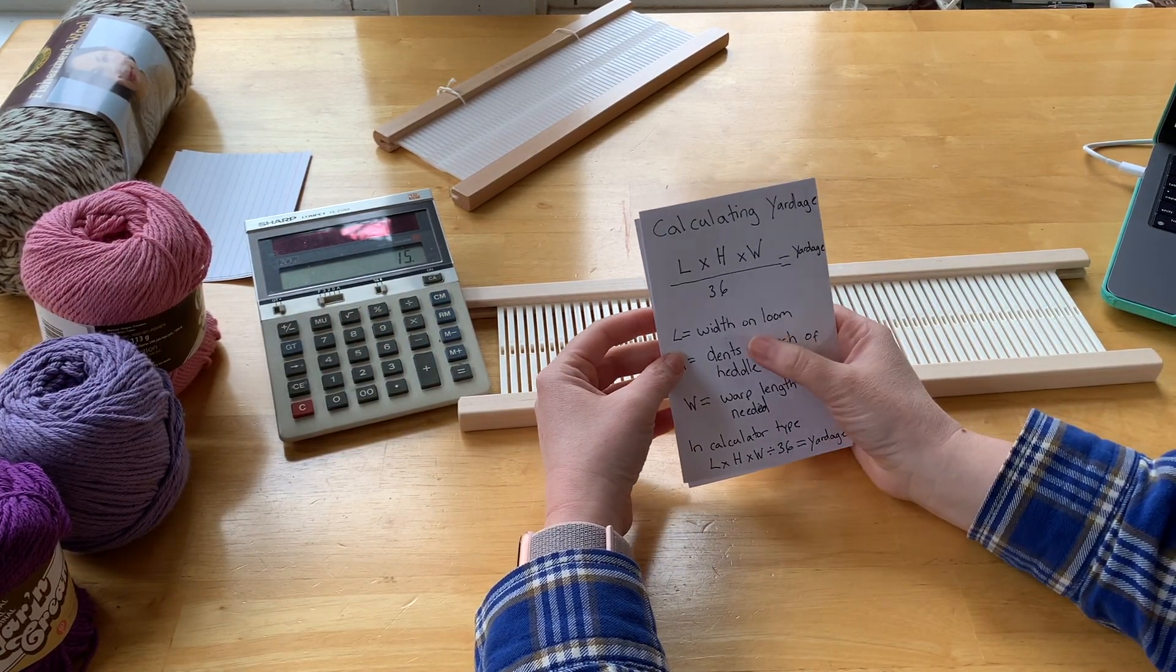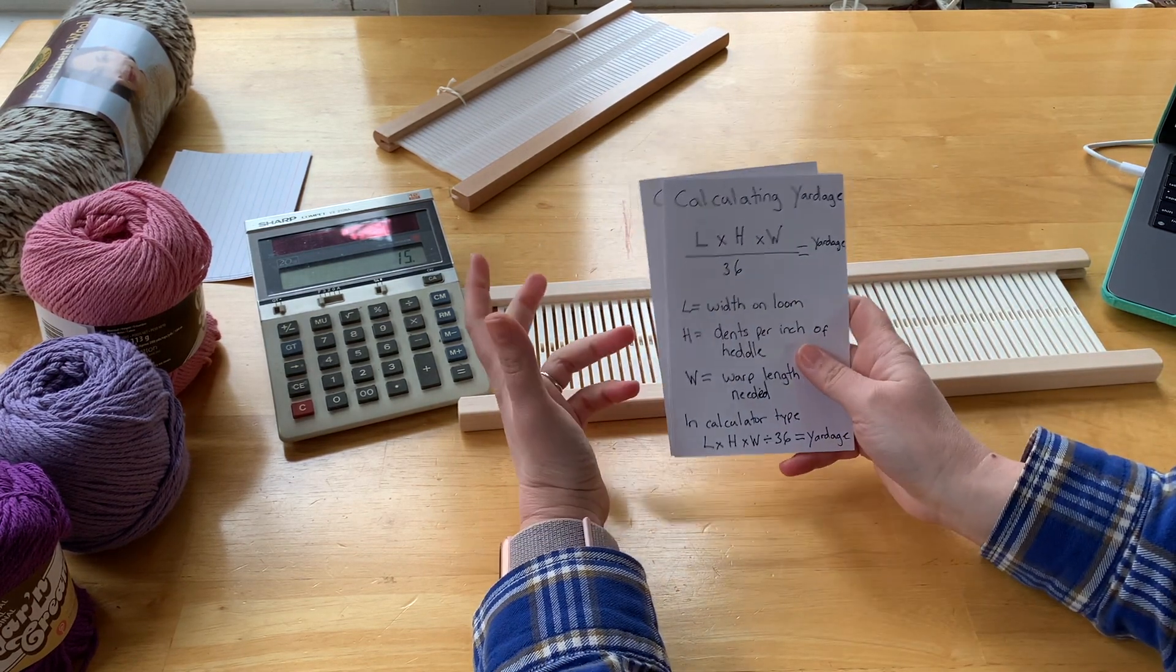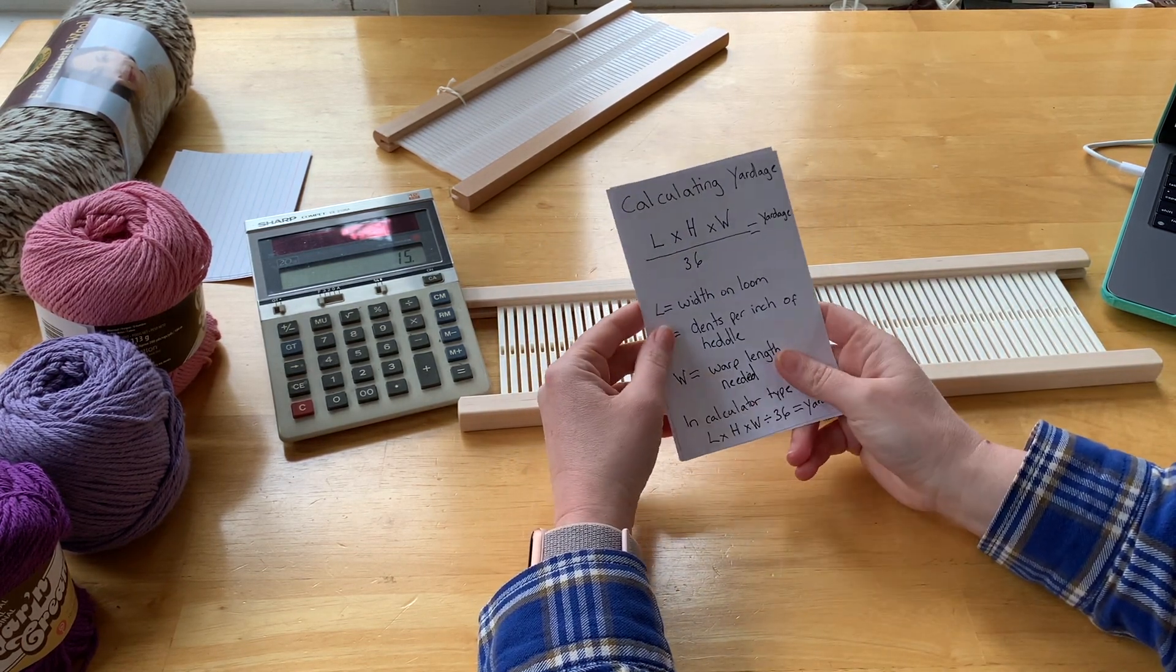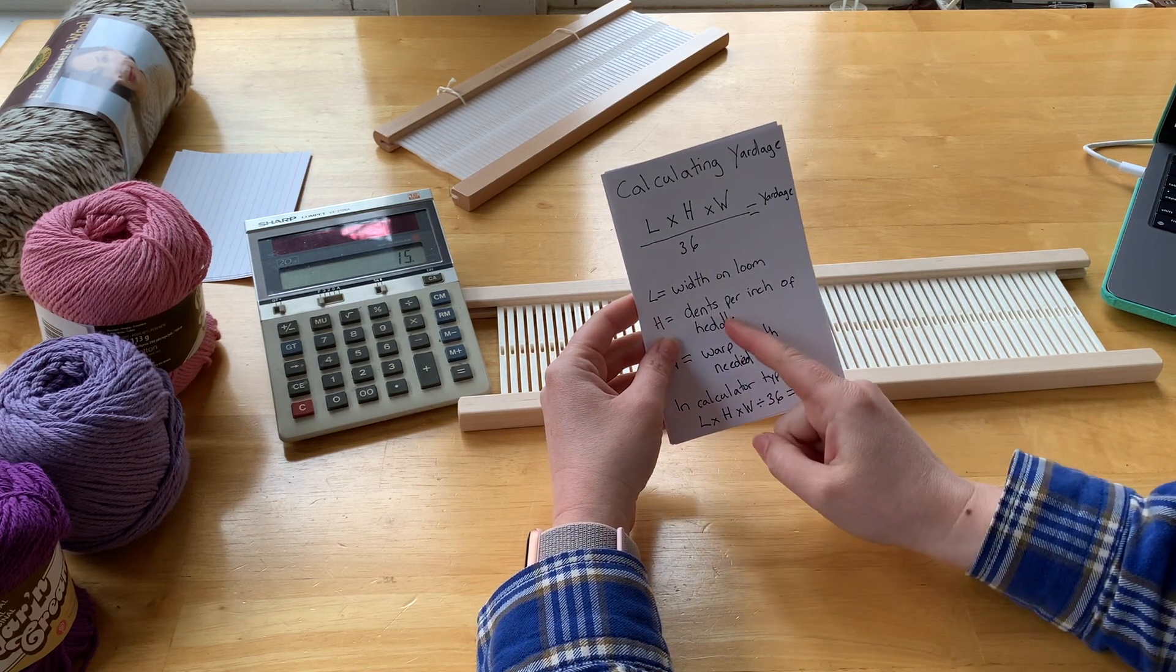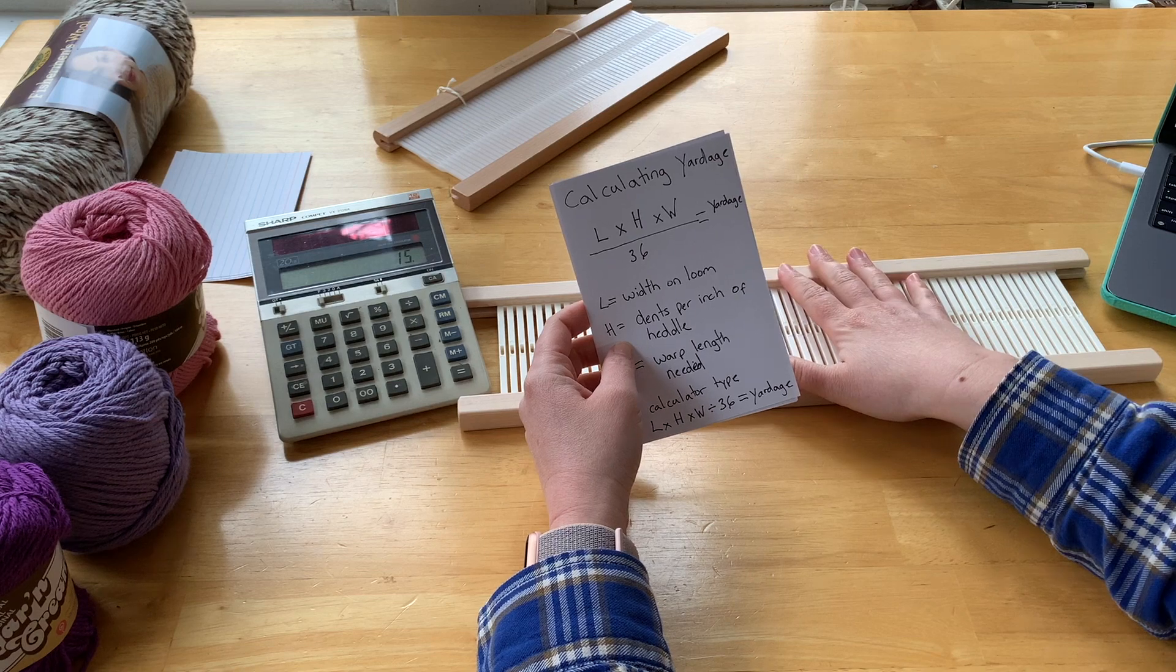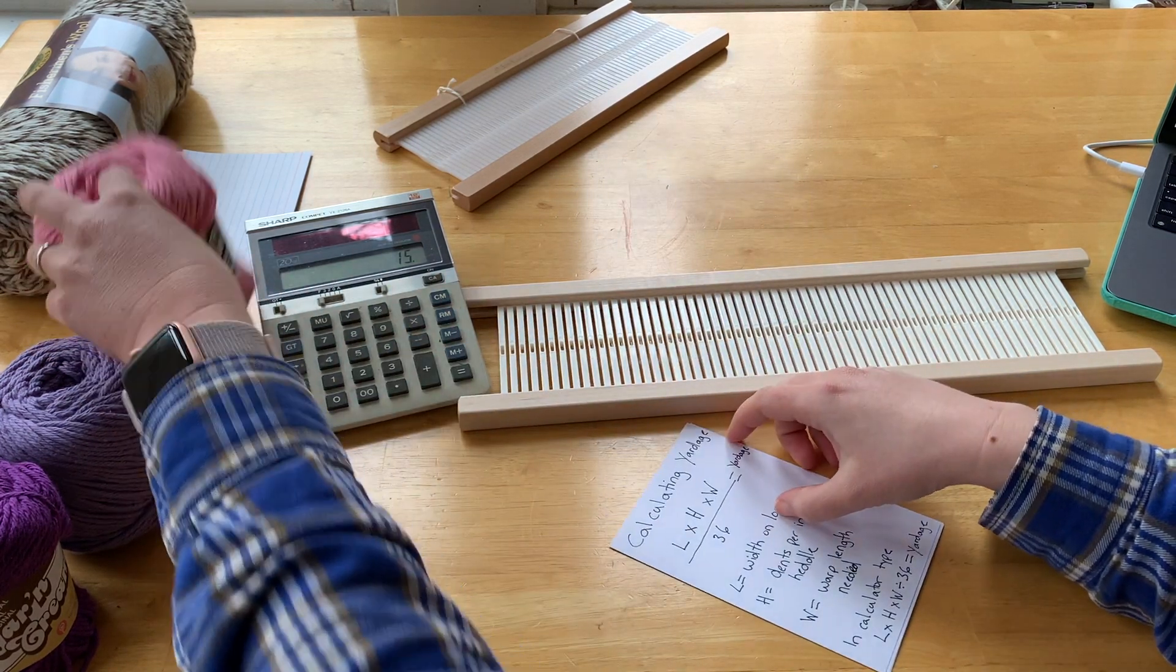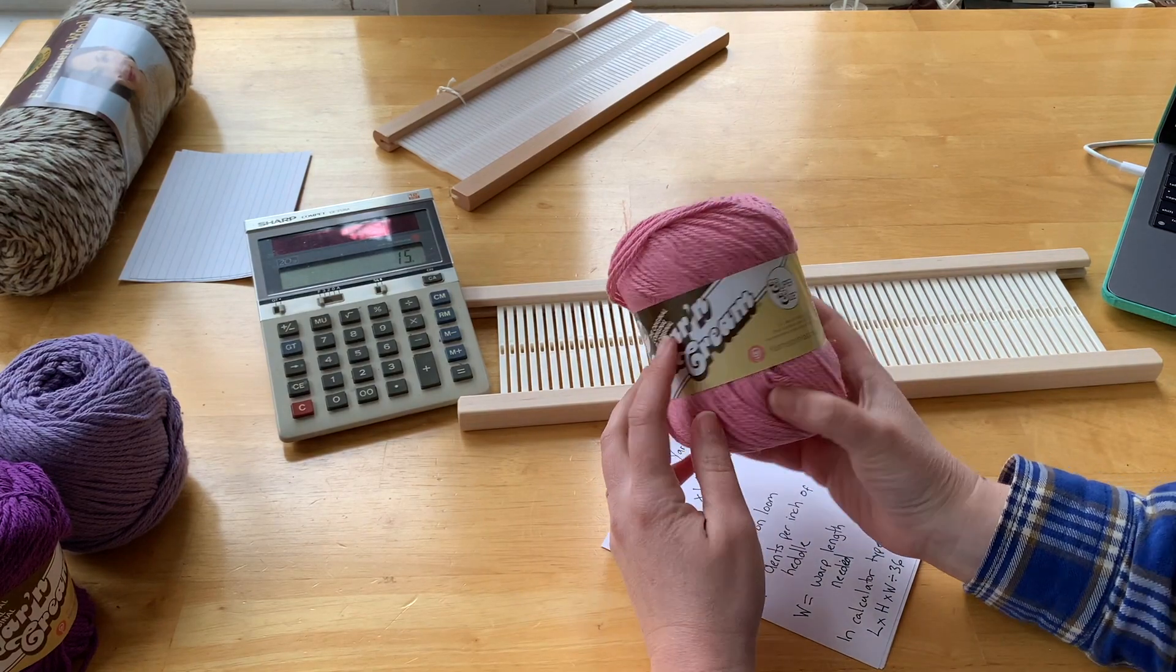And how you calculate that is you start with the width on loom that we calculated before, which in my case is 30. And you're going to times that by the number of dents per inch your heddle has. In my case, I'm going to be using an 8-dent-per-inch heddle because I'm going to be weaving with this Sugar and Cream yarn.